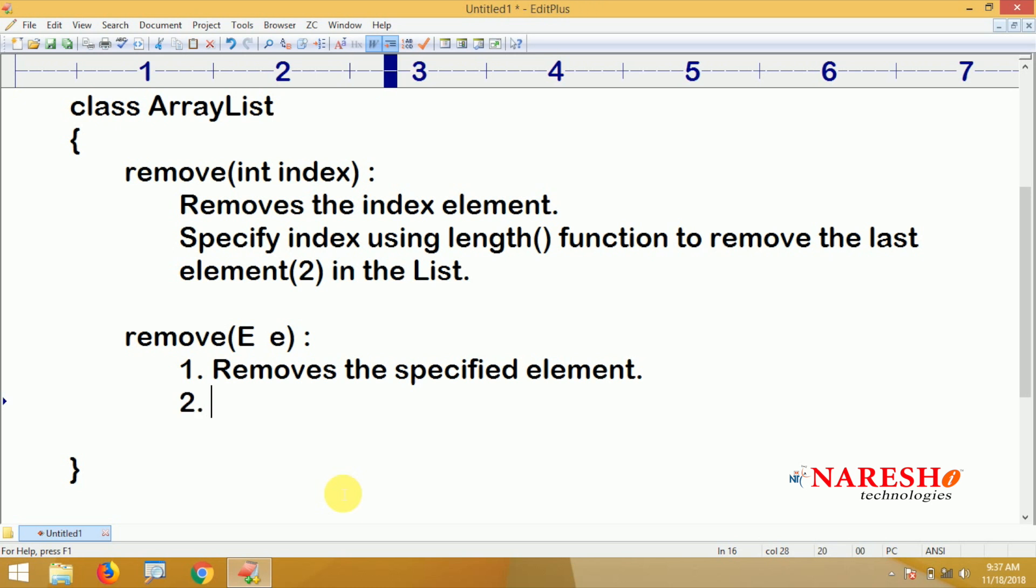How do we specify that element 2? Using wrapper concept. If you specify directly 2 it will consider as an index. As a primitive please do not specify. You should specify as an object by converting that primitive integer into object type integer.